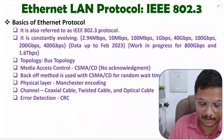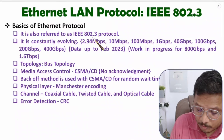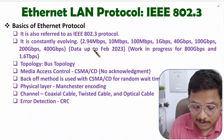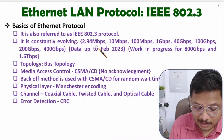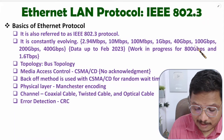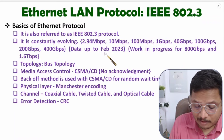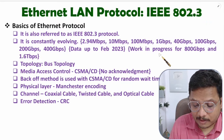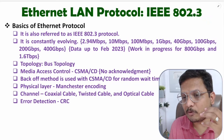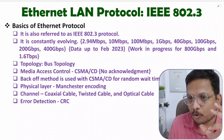This protocol is also referred to as IEEE 802.3. With respect to time, this protocol is continuously evolving. The earlier version had a speed of 2.94 Mbps, then it was upgraded to 10 Mbps, 100 Mbps, 1 Gbps, 40 Gbps, 100 Gbps, 200 Gbps, and 400 Gbps — available as of February 2023. Work is in progress for 800 Gbps and 1.6 Tbps. So with respect to time, bandwidth is increasing with this LAN protocol.